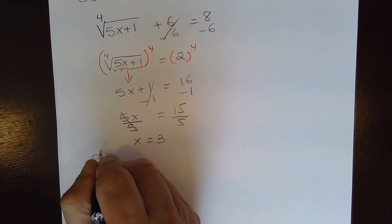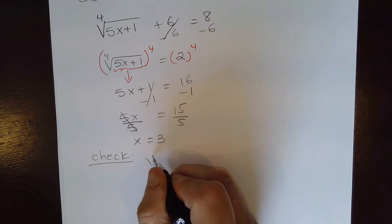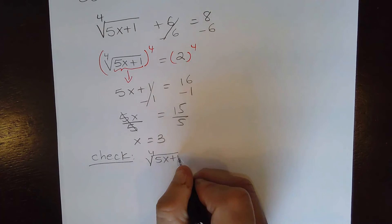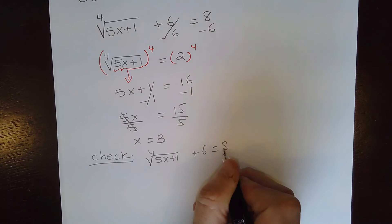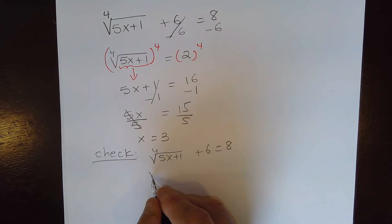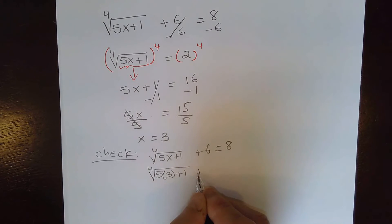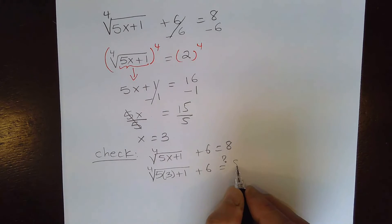Now let's check if this is the solution. Our original equation is the 4th root of 5x plus 1 plus 6 equal to 8. So replace x with 3 and we'll see if this is the solution. That's why we have a question mark here.